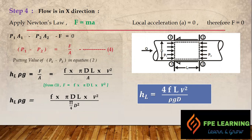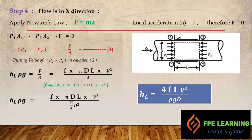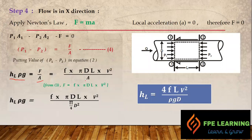Now substitute Equation 4 into Equation 2. From Equation 2: P1 − P2 = HL · ρ · g. From Equation 4: P1 − P2 = frictional resistance / A. Substituting the frictional resistance from Equation 3 (F · π·D·L · V²) and dividing by the pipe cross-sectional area A = π/4 · D², the π terms cancel and D terms partially cancel, leaving a factor of 4 at the top.